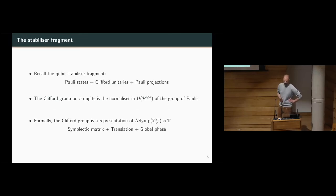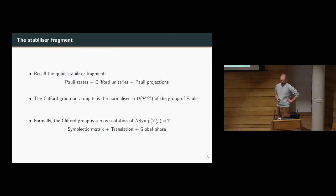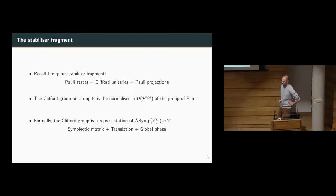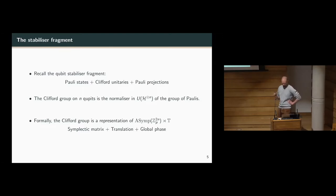What is the stabiliser fragment for qudits? Recalling from the qubit case: the stabiliser fragment is what you get if you have access to initialisation of Pauli eigenstates, can apply Clifford unitaries, and can measure or project onto the eigenstates of Pauli operators. In the p-dimensional case we do exactly the same thing, recalling that the Clifford group on n qudits is the normaliser of the group of Paulis in the unitary group, giving us an analogous Clifford or stabiliser fragment.